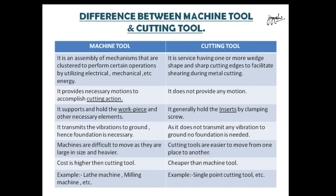The fourth difference: the machine tool transmits vibrations to the ground. When we are doing machining, there are chances that vibrations are produced, which are necessary to transmit. The machine is fixed on a foundation, so it transmits vibrations to the ground, while the cutting tool does not perform any such function.